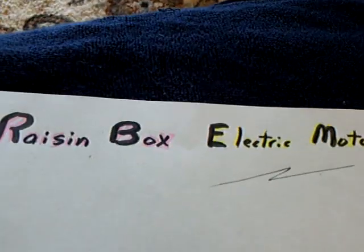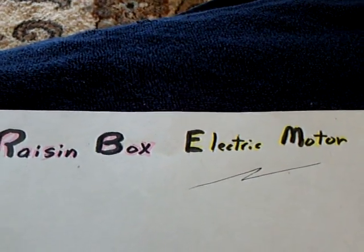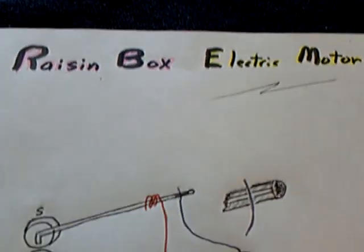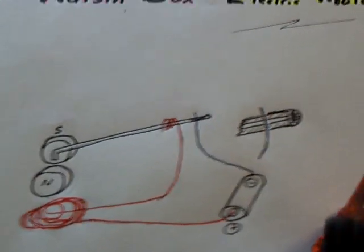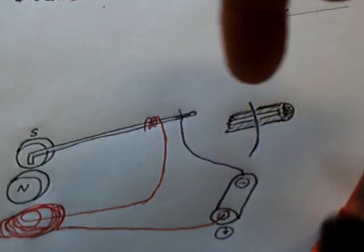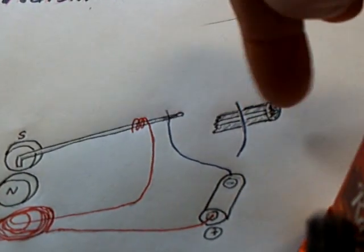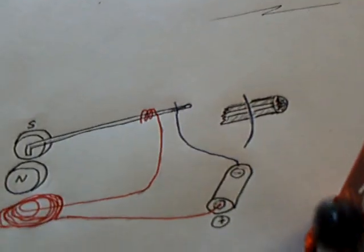I just call this the raisin box electric motor. This shows the commutator setup. I'm using correction fluid on the shaft with an open gap there to make the make and break.